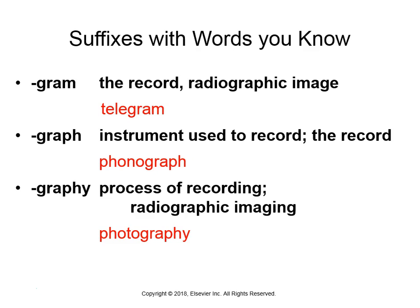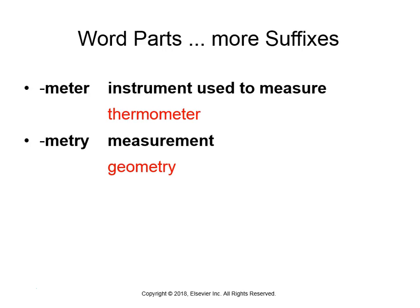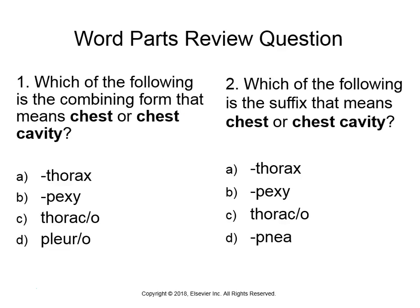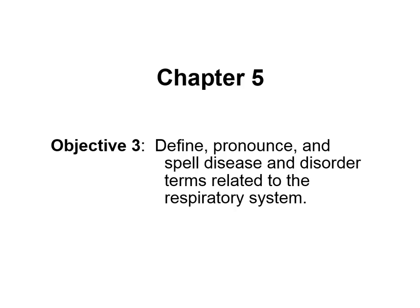A quick review: the combining form meaning chest or chest cavity is thoraco, while the suffix meaning chest or chest cavity is -thorax. The gram/graph/graphy distinction and the meter/metry distinction are also reviewed here — gram is the image, graph is the instrument, graphy is the process; meter is the instrument, metry is the process.